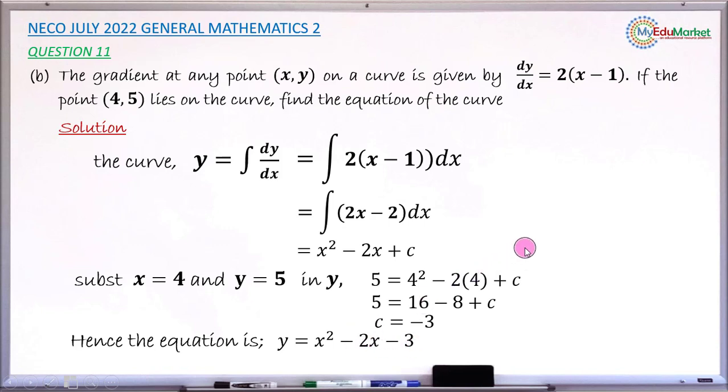So let me just share with you the mark distribution for this very question as it is contained in the marking scheme. So the very first mark is method 1 mark. When you now write the integral of 2 into (x minus 1) with respect to x, you have this method 1 mark.